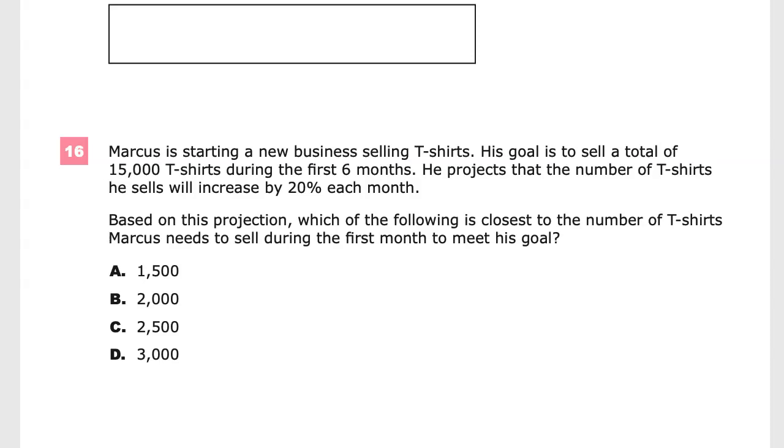Welcome, this is the Integrated Math 3 Practice Test for TEN Ready. On this version of the test is question number 16. Marcus is starting a new business selling t-shirts. His goal is to sell a total of 15,000, so that means adding all the months together, and that will be important for us later. During the first six months, he projects that the number of t-shirts he sells will increase by 20%.